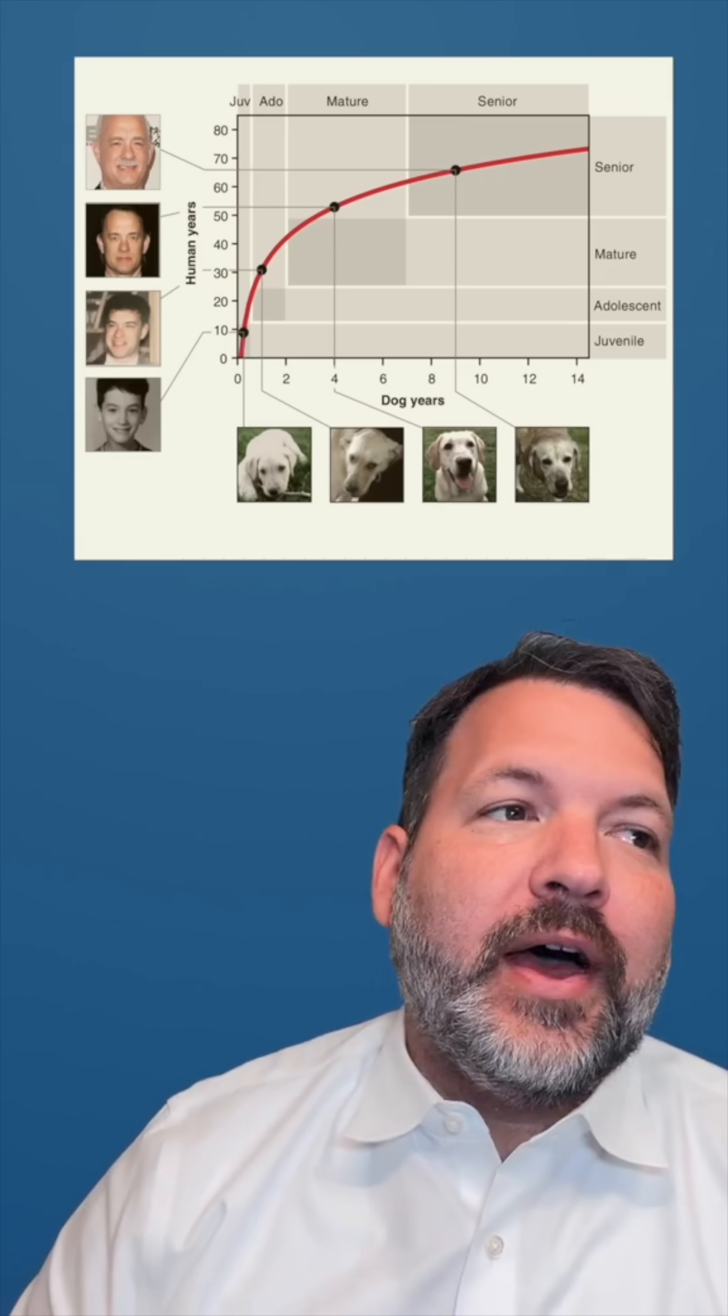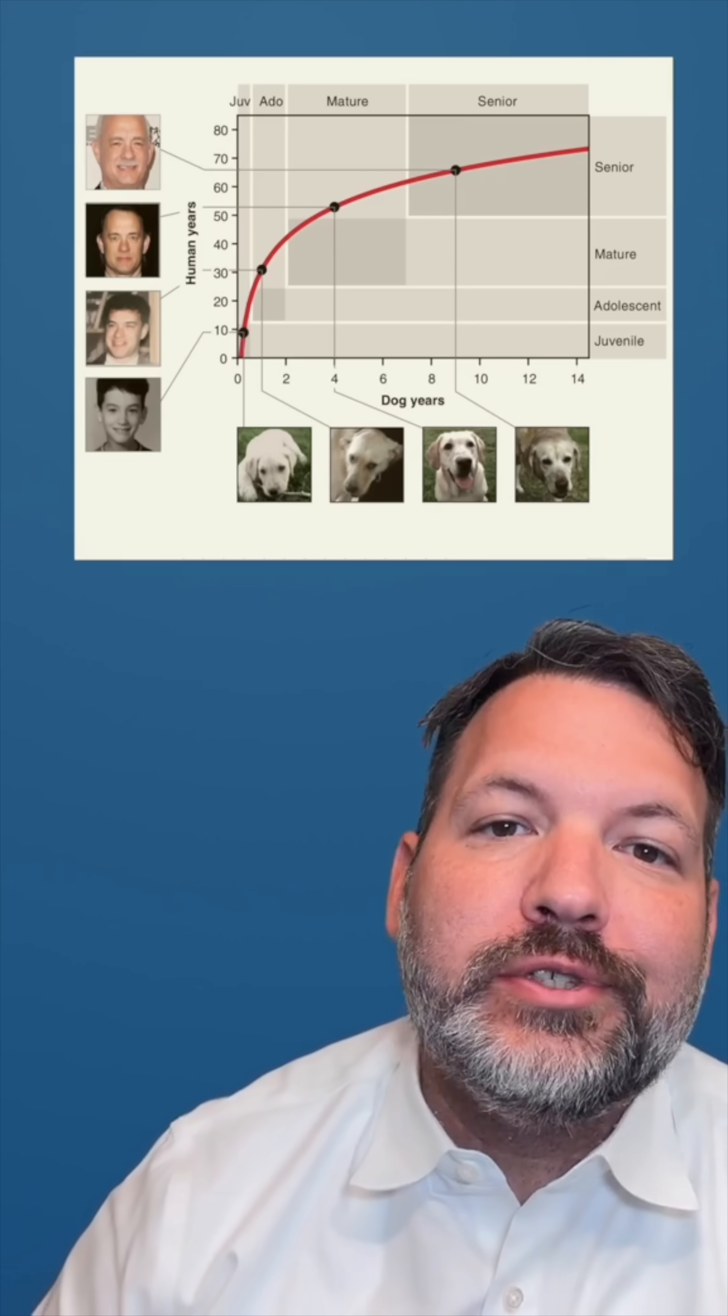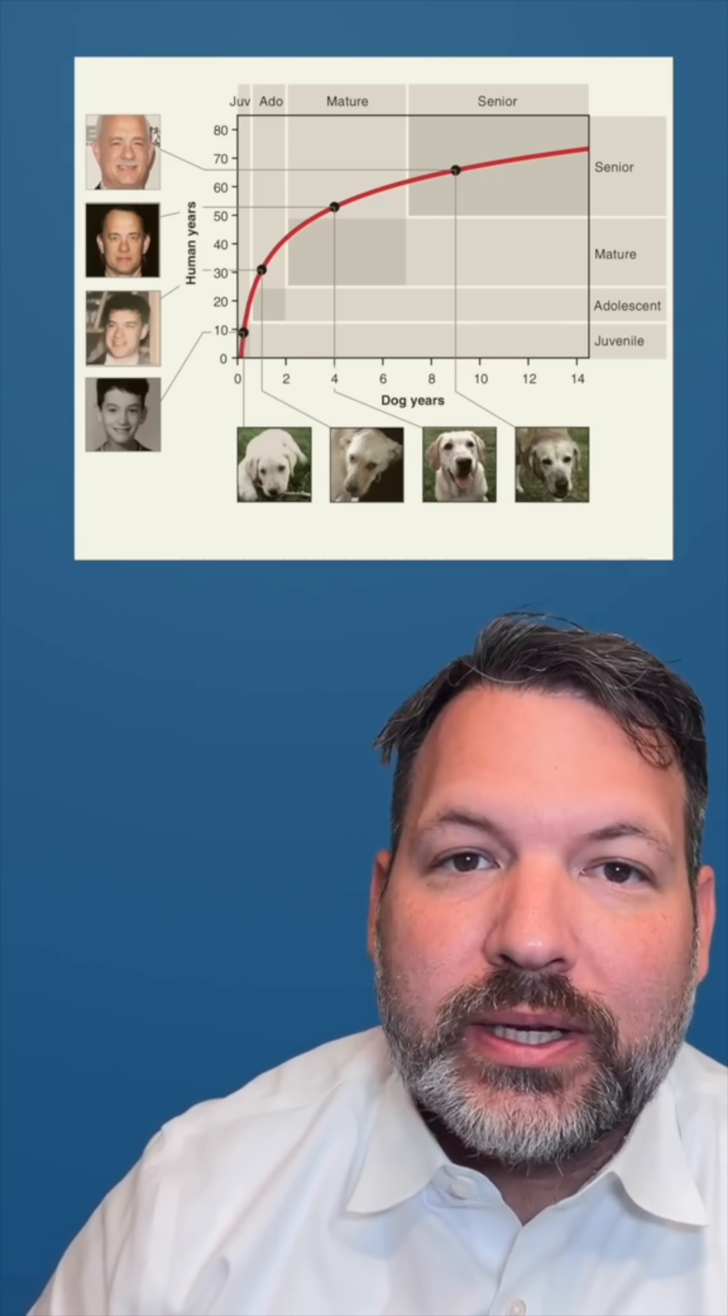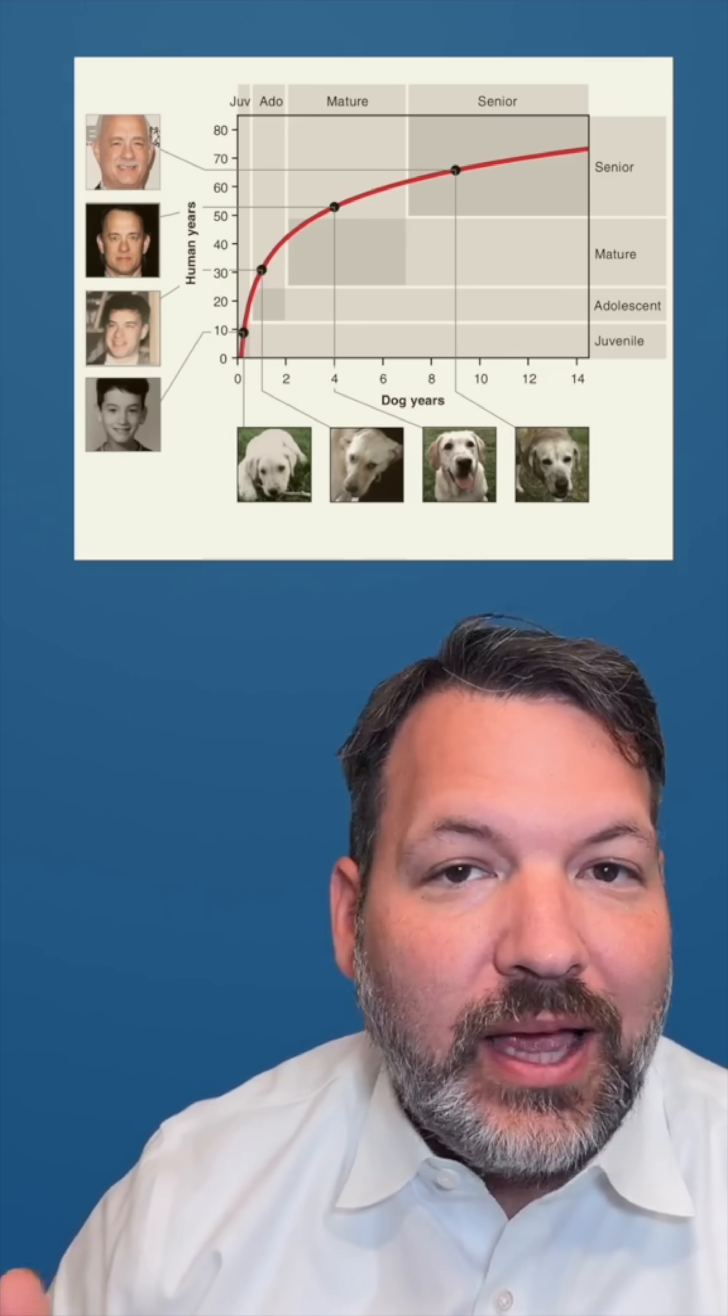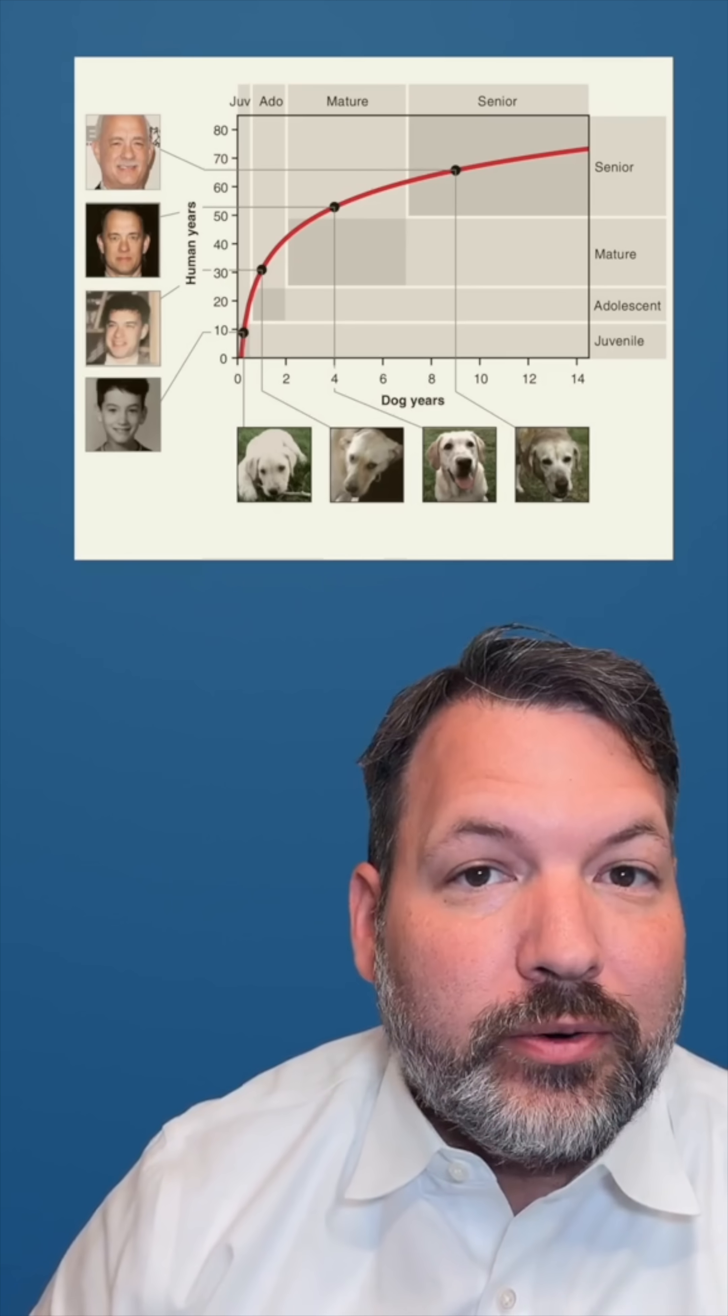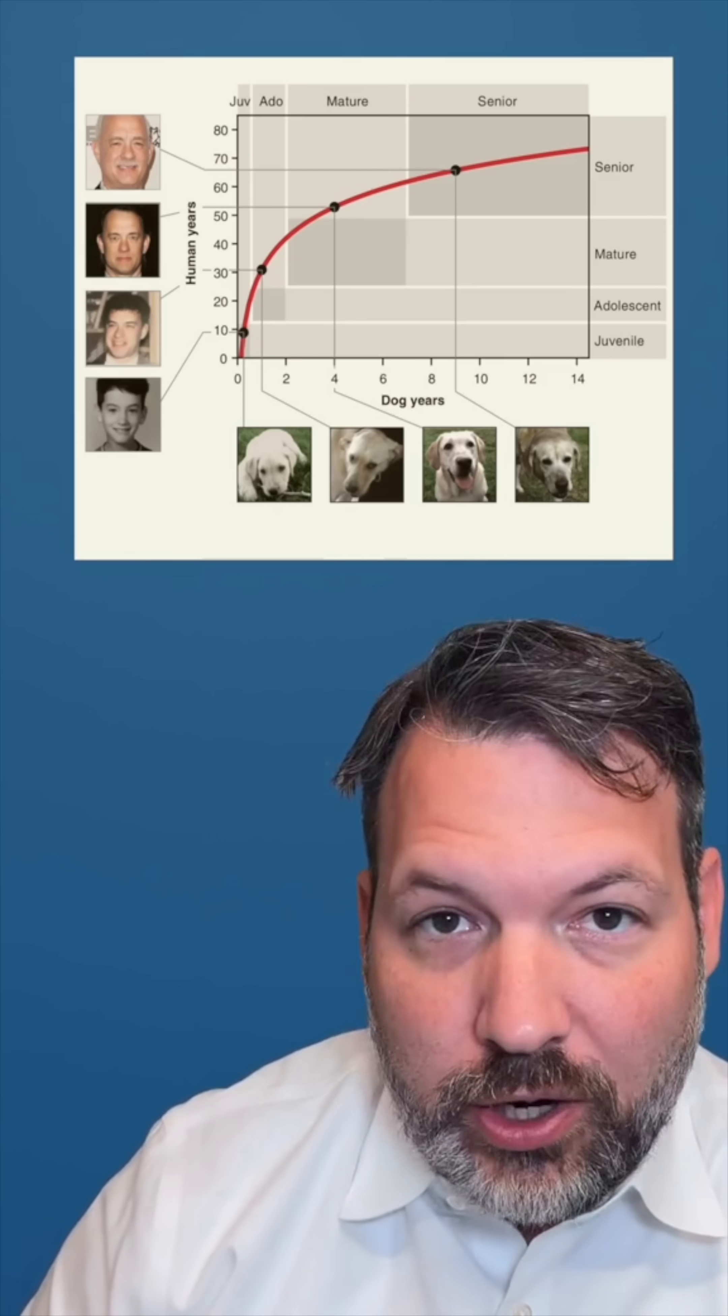The problem, the researchers found, is that this doesn't really correlate the kinds of aging milestones you would associate with a dog's life and a human's life in the way that we would expect. That is, a one-year-old dog isn't like a seven-year-old. A one-year-old dog is more like a 30-year-old. They can have doggy children and, I don't know, rent doggy cars.